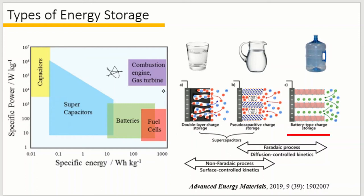A battery, on the other hand, realizes energy storage by ion intercalation and redox reactions. The process is faradaic with phase transformation. Because the process is diffusion-controlled, the charge process is very slow. Comparing a supercapacitor and a battery is like comparing a glass of water and a tank of water. If the water is energy stored in the device, a supercapacitor stores little energy but can be discharged quickly, while a battery stores much more energy but can only charge and discharge slowly.